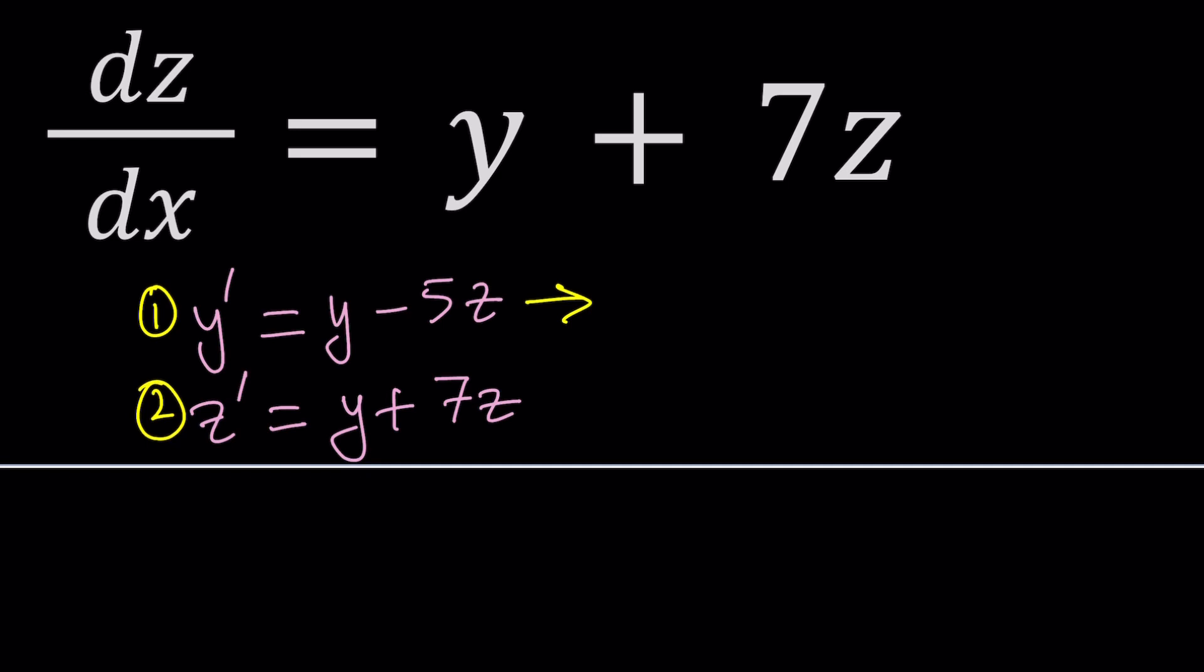And I will differentiate both sides with respect to x one more time. But if you differentiate y prime, you get y double prime, which is the second derivative of y. And on the right hand side, you get y prime minus 5z prime. We don't really have any powers, like z squared or e to the power z, so differentiating these would be fairly straightforward.